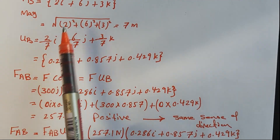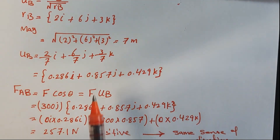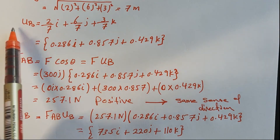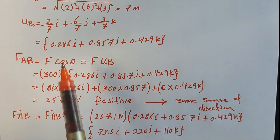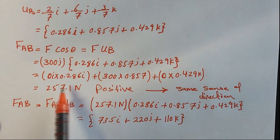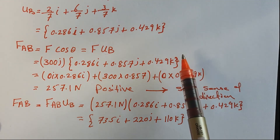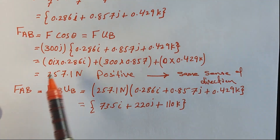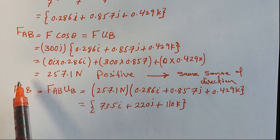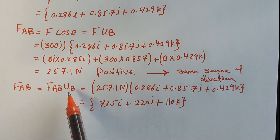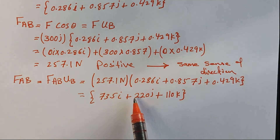We found the unit vector and the magnitude of the force. The magnitude being positive means it's along AB with the same direction as the force itself. We can now express F_AB along the X, Y, and Z axes in Cartesian form by multiplying by the unit vector.